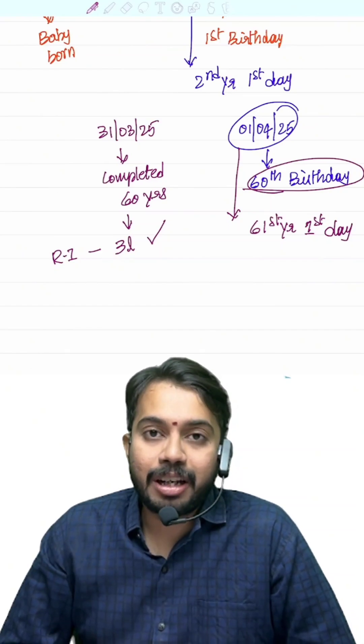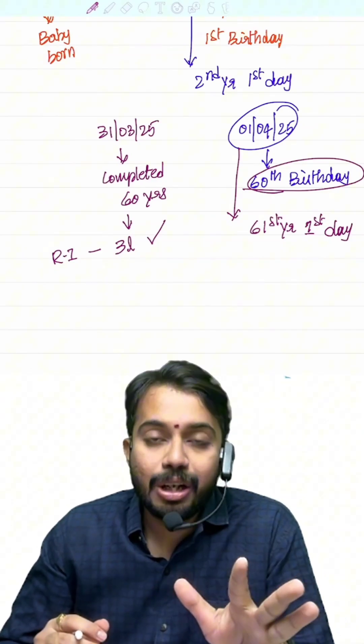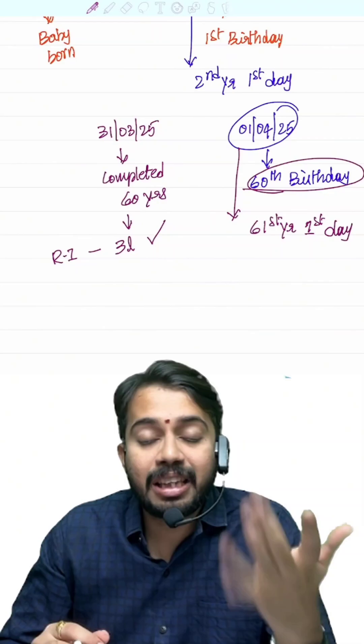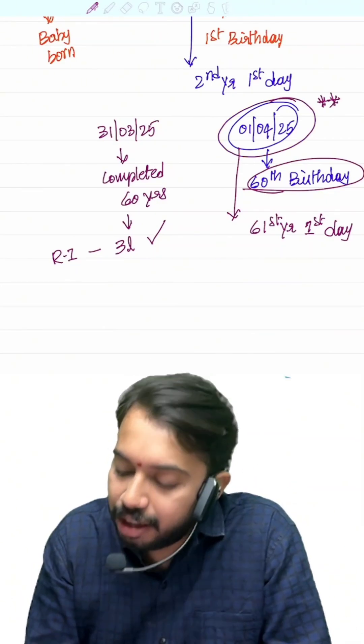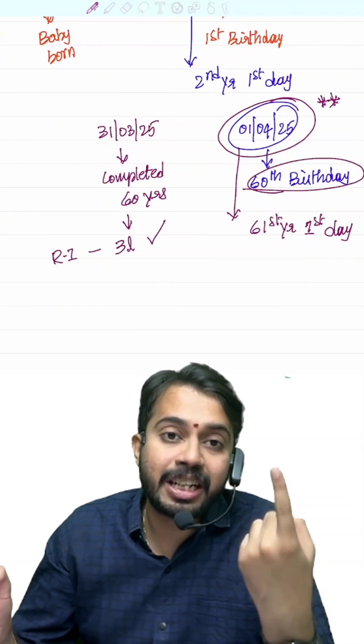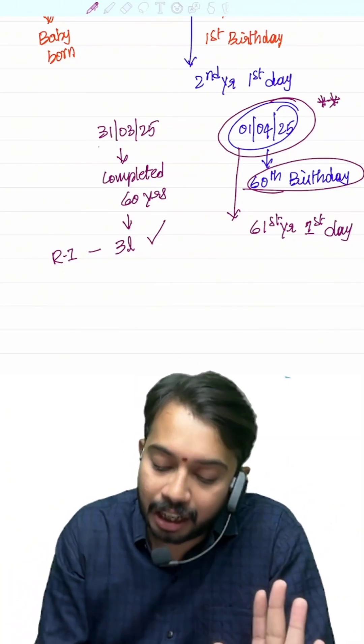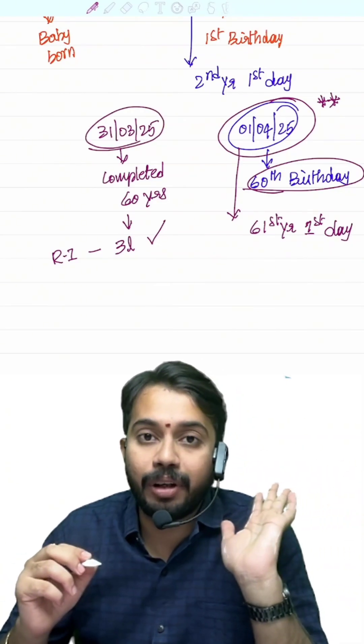So those individuals who are celebrating their 60th birthday or 80th birthday on 1st April 2025, very important. Logically, they would have finished 60 years or 80 years on 31st March 2025.